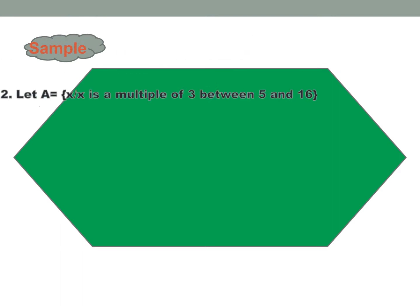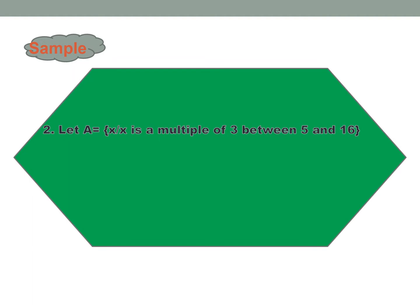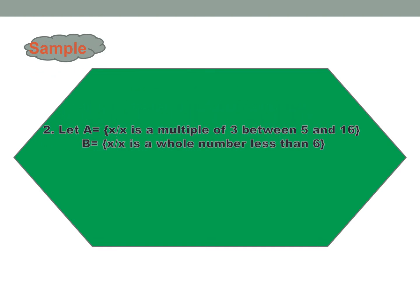Now we are going to the next sample. Let A be equal to the set of X such that X is a multiple of 3 between 5 and 16, and B is equal to the set of X such that X is a whole number less than 16. We find A minus B and B minus A.